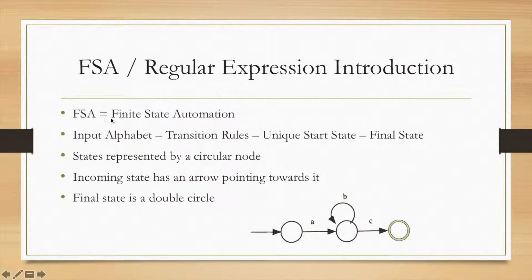First, FSA is a finite state automation. There are four different things that you'll notice about that: the input alphabet, transition rules, unique start state, and final state. The states are represented by these circular nodes. The incoming state has an arrow pointing towards it, and you're going to run an expression through an FSA. If it checks out, it'll end up at one of these final states, which is represented by a double circle.